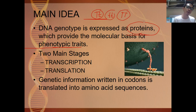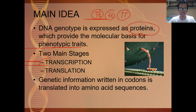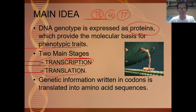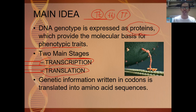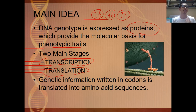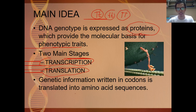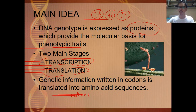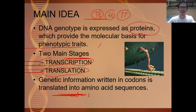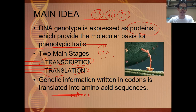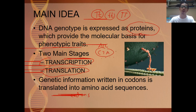There are two stages of how protein is created in the cell: transcription and translation. The genetic information is written in codons and is translated into an amino acid sequence. Codons are three-letter combinations of the DNA — for example, ATC, CTA, and so on. They always have a three-letter combination. Codons are made up of three nitrogenous bases, always three.